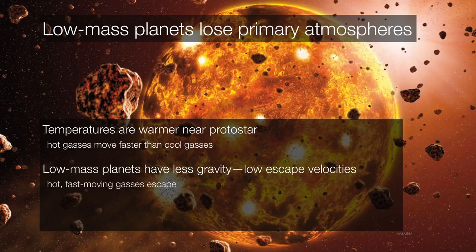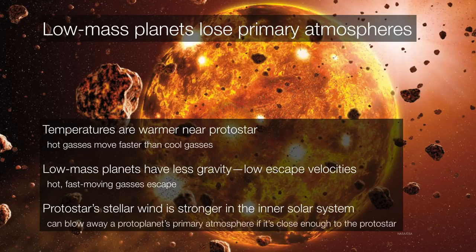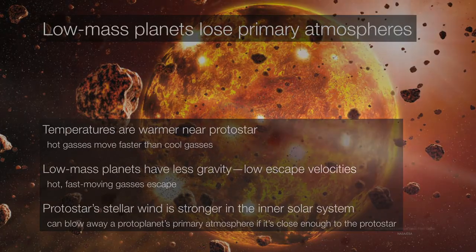And they're also closer to the proto-sun. That means that there's a stronger stellar wind coming from the proto-sun, which just makes it that much harder for these lightweight volatiles to stick to the proto-planets. So any proto-planetary atmosphere of the inner solar system is just going to be blown away by the sun.